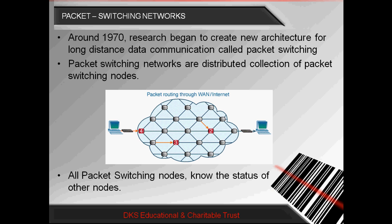In a Packet Switching Network, all Packet Switching Nodes know the exact status of another node. Consider Node A, Node B, and Node C. If Packet Switching Node A wants to send information to C, then it transfers the data through B. Suppose if the B router is busy, then it may transfer data through some other routers. For this purpose, each and every router should know about the status of nearby routers.